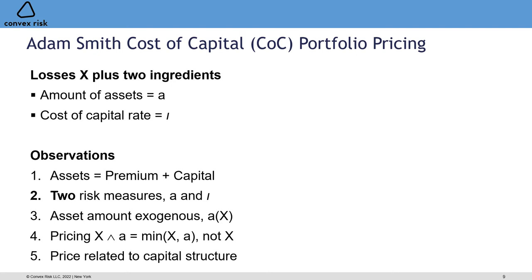We need two risk measures: one determines the amount of assets A, and the other determines the cost of capital used. We assume the amount of assets is exogenous — given by some regulator or rating agency, often in the US as a function A of X. It's the assets available to pay claims that regulators worry about, not strictly the capital. If you were to write policies at a higher or lower premium, you would expect your capital amount to vary according to premium adequacy, so the regulator sets assets rather than capital, with the capital depending on premium.